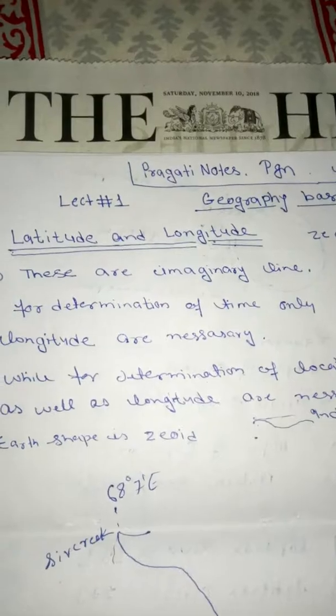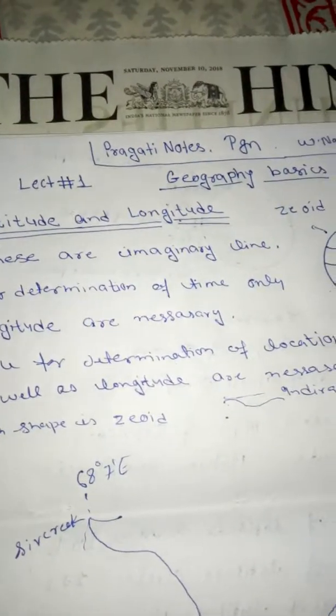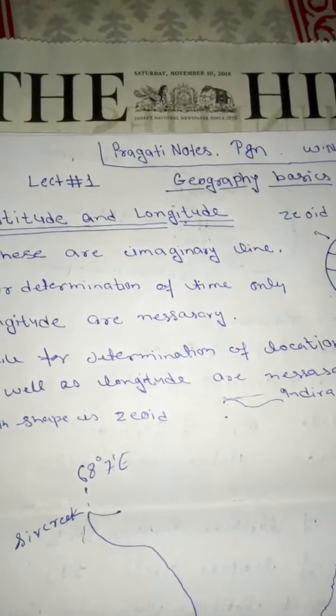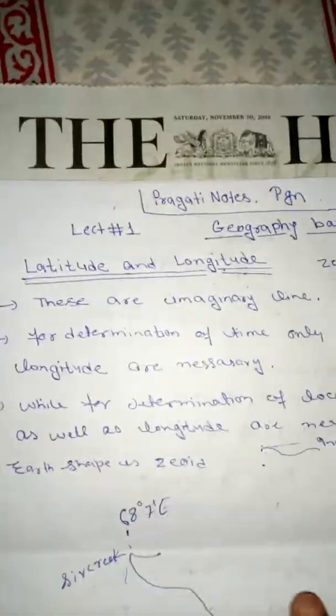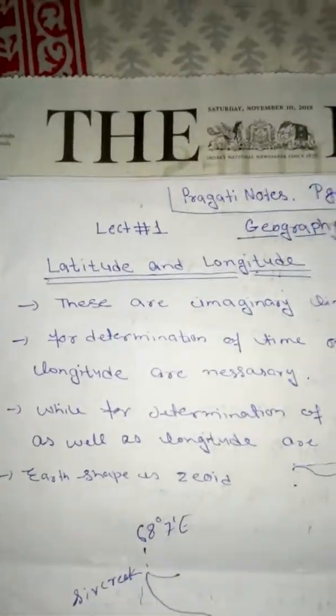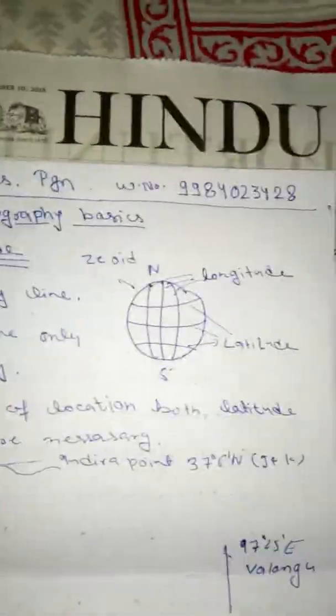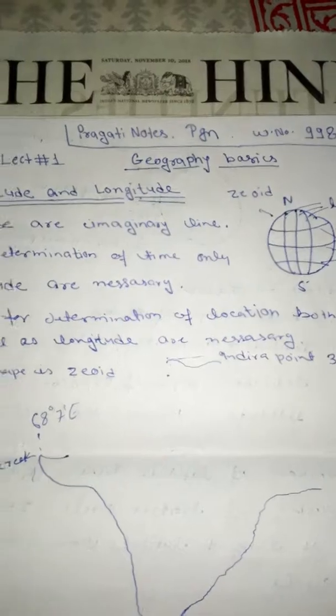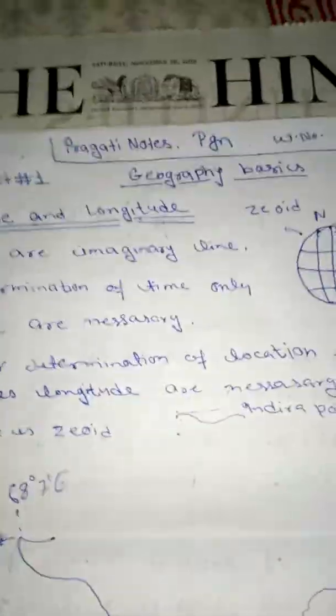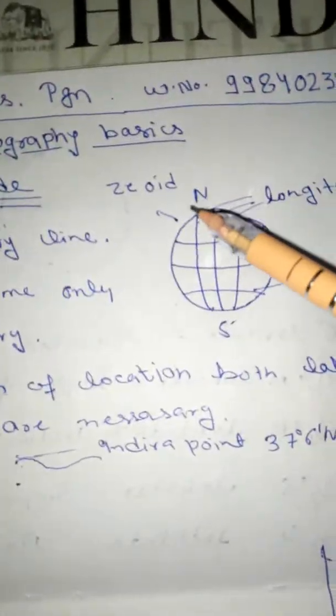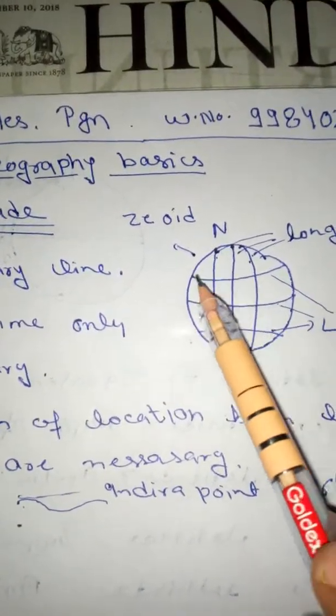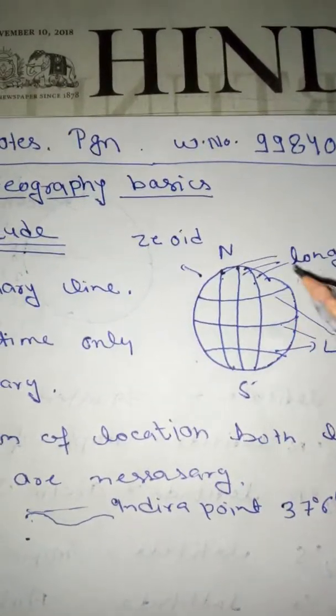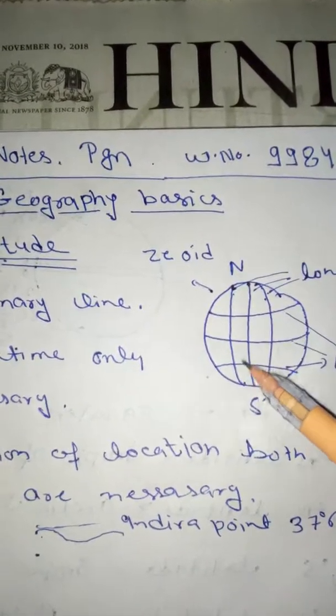So let's begin. Today we will discuss about latitude and longitude on geography which is a basic thing. The main things is these are imaginary lines. This is earth and these lines are called longitude, this line are called latitude.